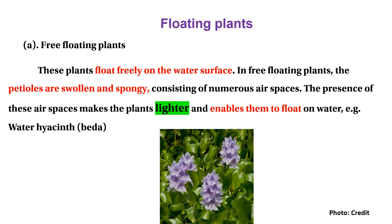In a free-floating plant, the tissue is spongy. The leaf consists of three main parts.